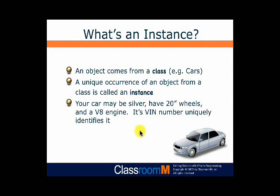An object is something that comes from a class. Sometimes we actually say that it's manufactured from the class or created from the class. In this analogy, our class is called cars. And every time I get a new object or a new car, I basically get a unique car from my class. We refer to a particular object that gets created from a class not only as an object, but also as an instance. So an instance is a particular object that gets created from a class.